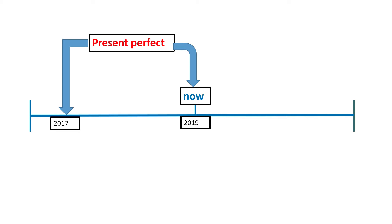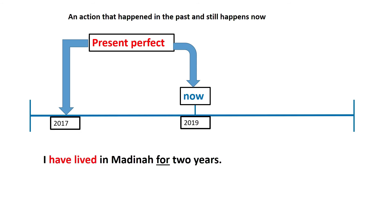Present perfect. This is an action that happened in the past and still happens now. We have two periods of time, for example between 2017 and 2019. So we say, I have lived in Medina for two years, or I have lived in Medina since 2017. I came to Medina in 2017 and I'm still here now.